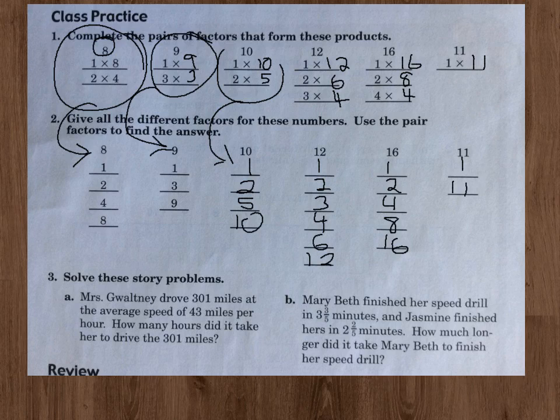3A, Mrs. Guantley drove 301 miles at the average speed of 43 miles per hour. How many hours did it take her to drive 301 miles? So you need to divide your 301 by 43, and that will be your answer. B says, Mary Beth finished her speed drill in 3 and 3 fifths minutes, and Jasmine finished hers in 2 and 2 fifths minutes. How much longer did it take Mary Beth to finish her speed drill? So what you're going to have to do is subtract here. You're going to take this and then subtract that from it, and that will be your answer.